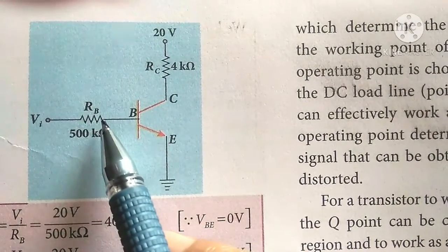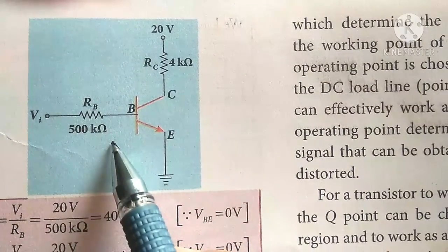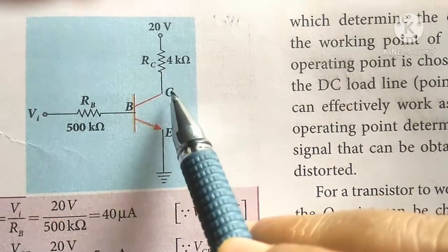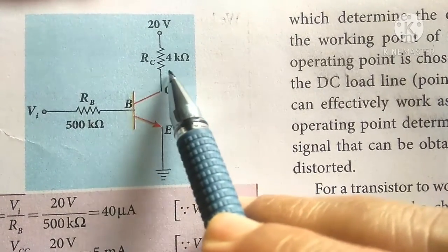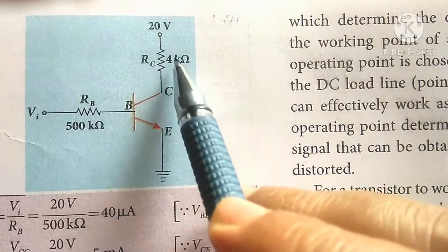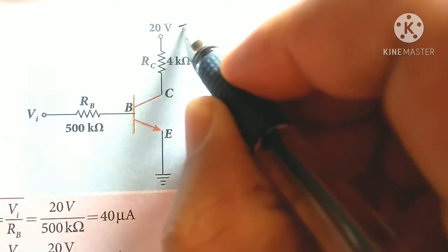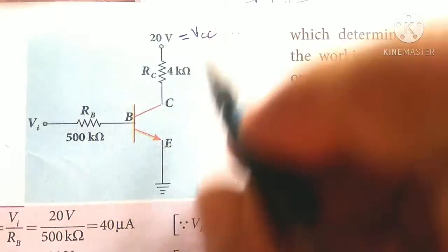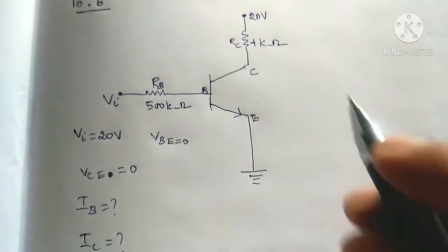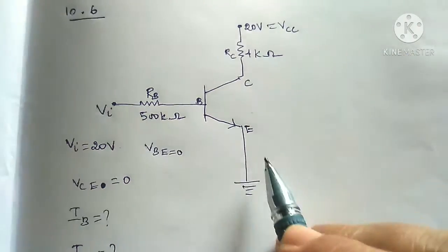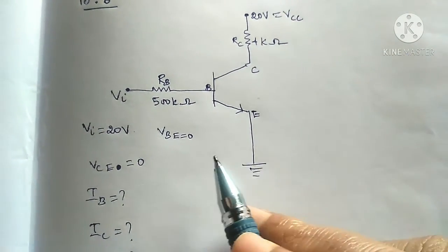It is input resistance RB, 500 kilo ohm. It is output resistance RC, collector across the connect power, it is 4 kilo ohm. It is collector supply voltage, it is VCC. So first IB find out.